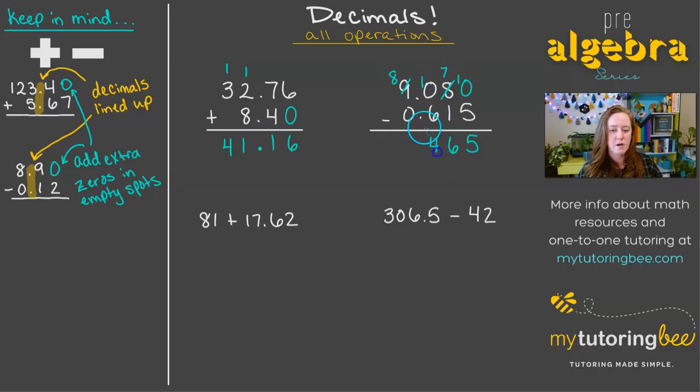10 minus 6 is 4. And then I'm going to go ahead and drop down that decimal. That's really the only different thing or extra thing with addition and subtraction. And then 8 plus 0 is 8. So that's our answer for that.